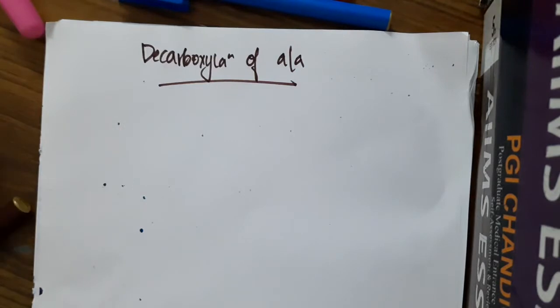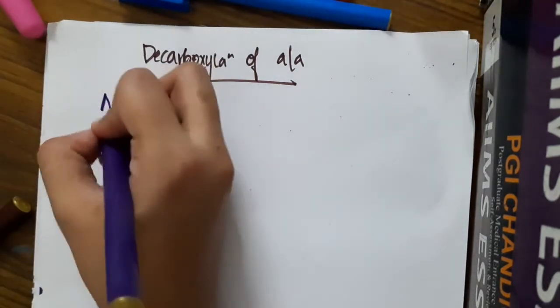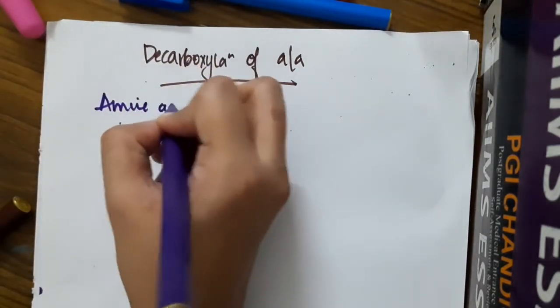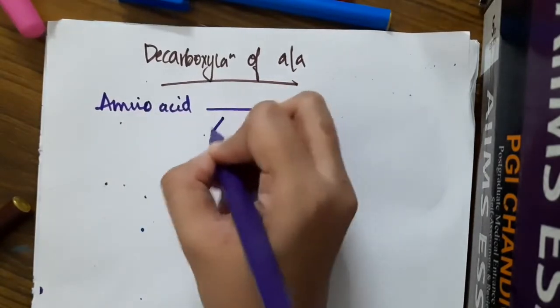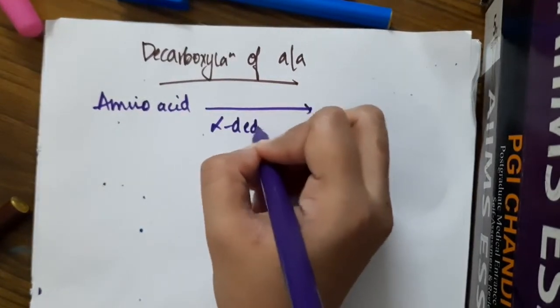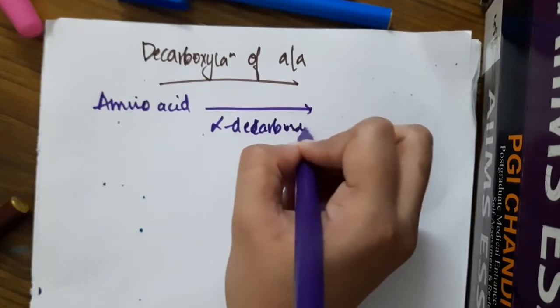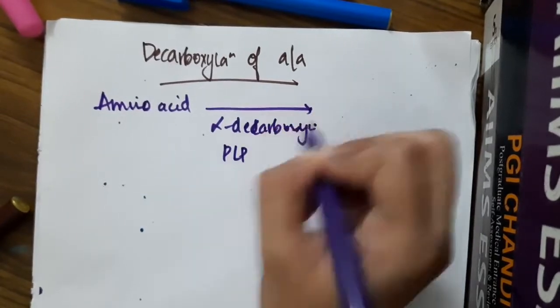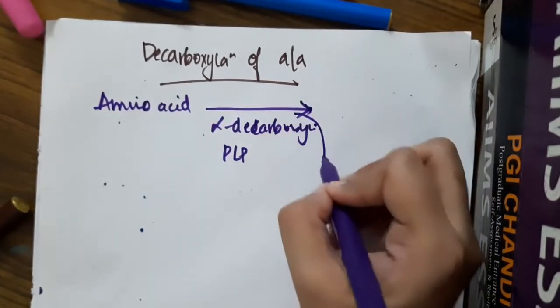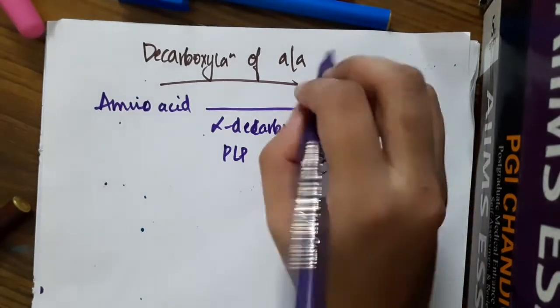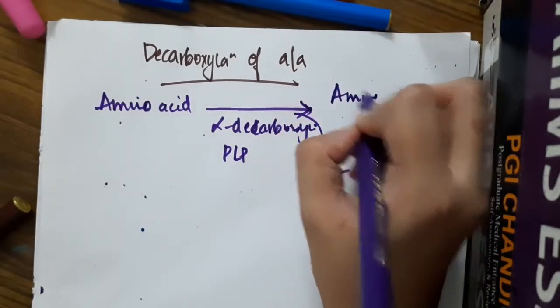In decarboxylation of amino acid, an amino acid undergoes alpha decarboxylation in the presence of coenzyme PLP and carbon dioxide is removed and it results in the formation of amine.